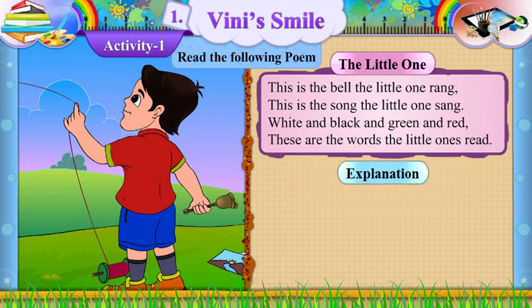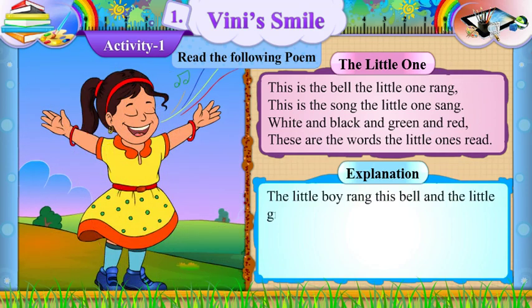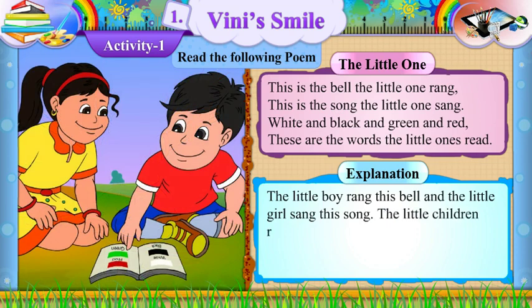Explanation: The little boy rang this bell and the little girl sang this song. The little children read the words: white, black, green and red.